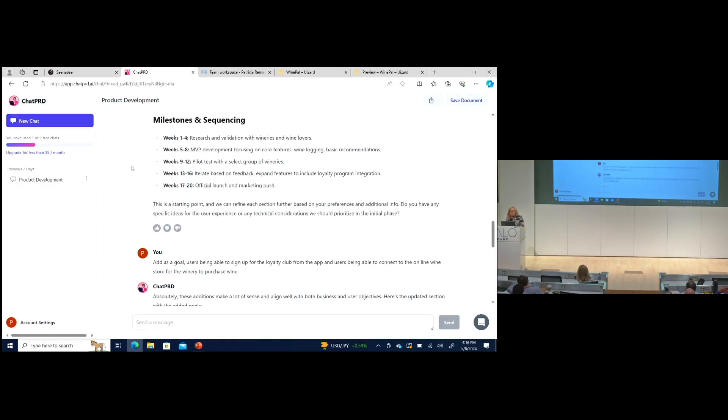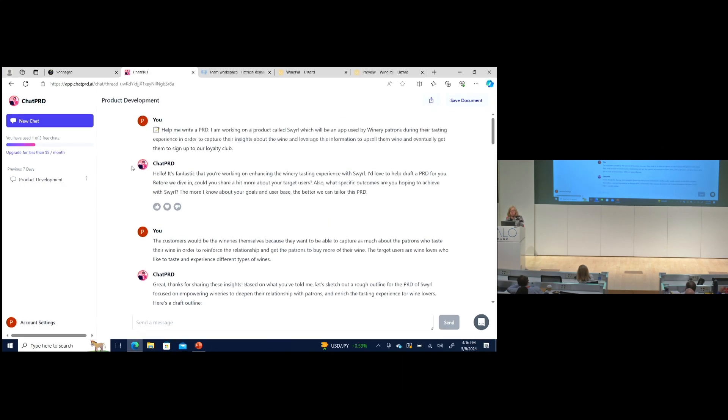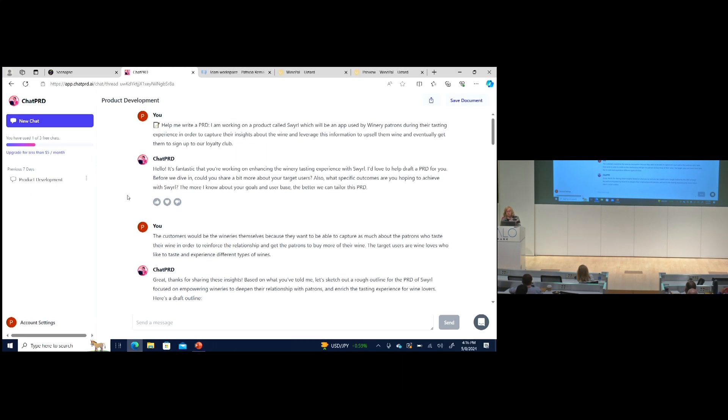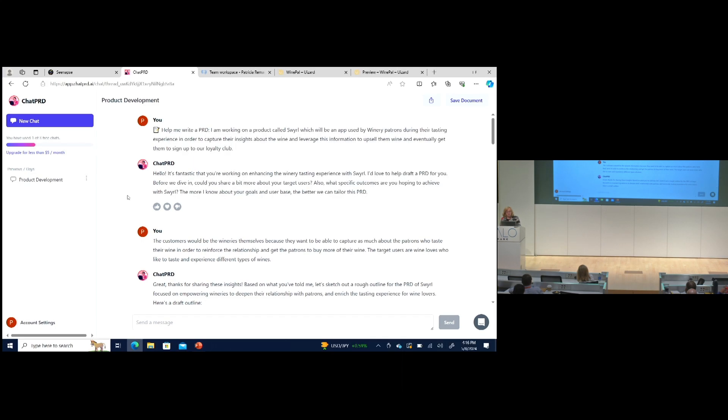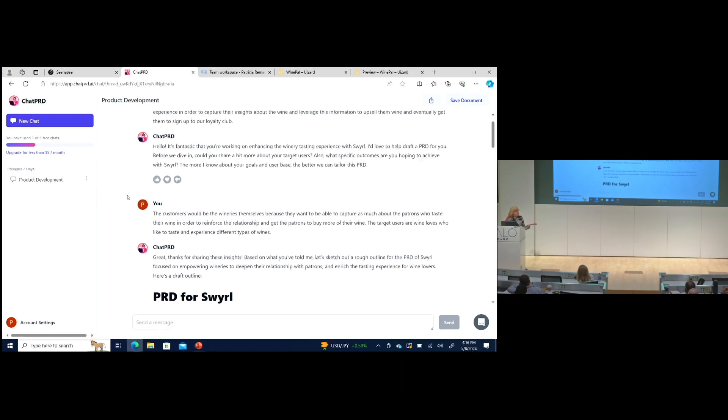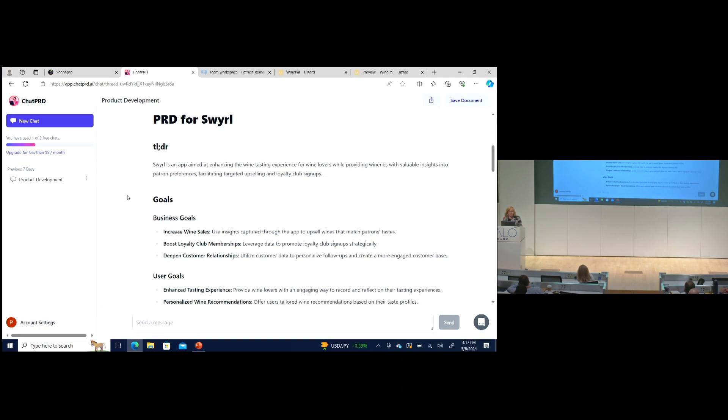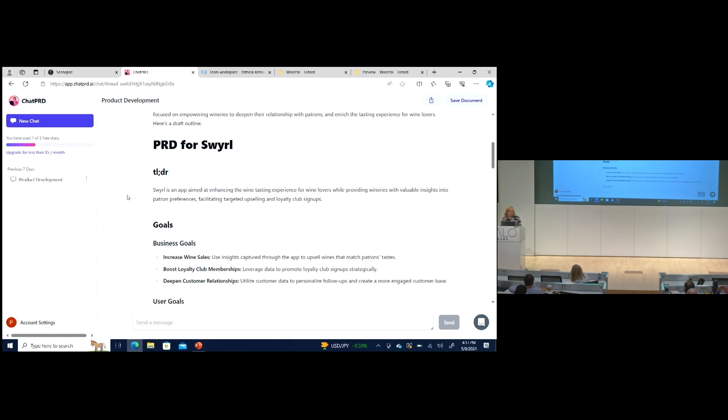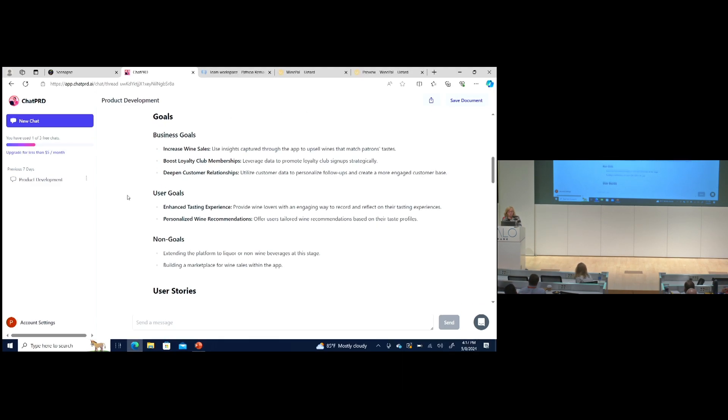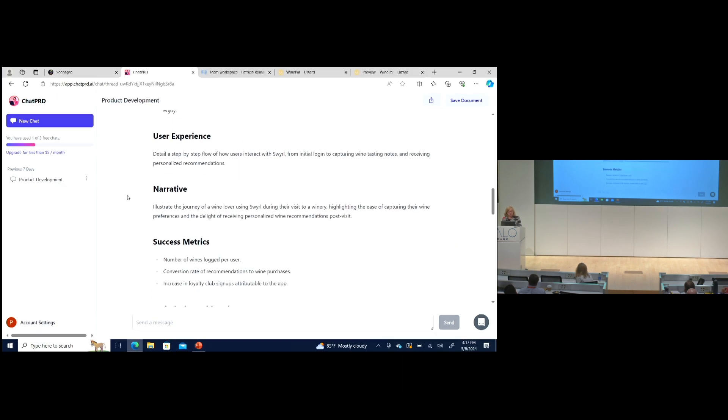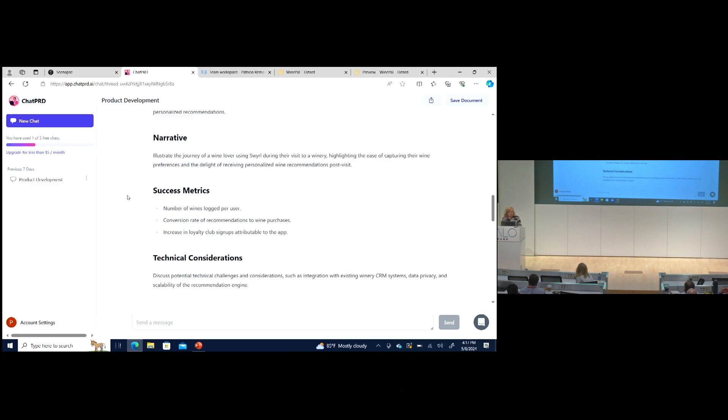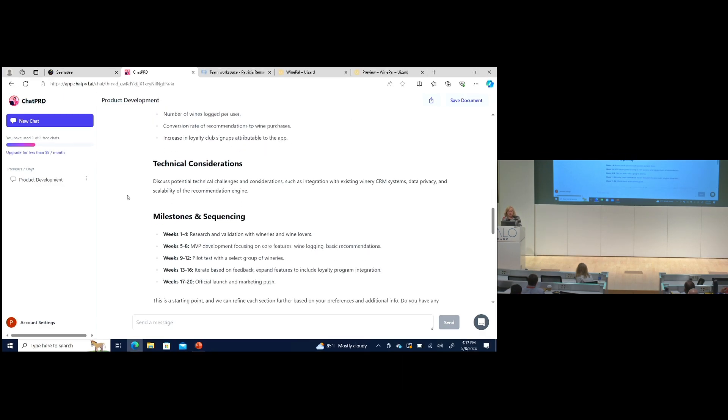The next one is ChatPRD. I took the idea for Swirl. I said I want to write a PRD for this. I have a product called Swirl. It will be an app used by winery patrons during their tasting experience to capture their insights about wine, leverage this information to upsell them wine, and eventually get them to sign up for the loyalty club. It asked me who's the customer, who's going to buy this app, who's the users of the app. Then it spits out basically the beginnings of a PRD. It goes through the TLDR, the goals, business goals, user goals, user stories, your user experience, success metrics, technical considerations, and milestones and sequencing. This is pretty bare bones.